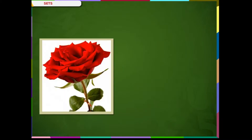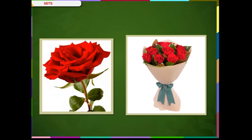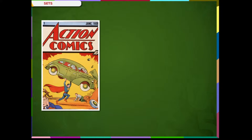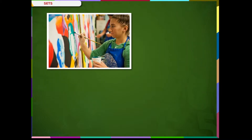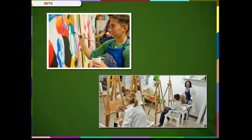Sets. This is a rose flower. This is a bouquet of rose flowers, or a collection of rose flowers. This is a comic book. These are a bundle of comic books, or a collection of comic books. This is a student painting a canvas. This is a group of students painting a canvas, or we can say a collection of students painting a canvas.